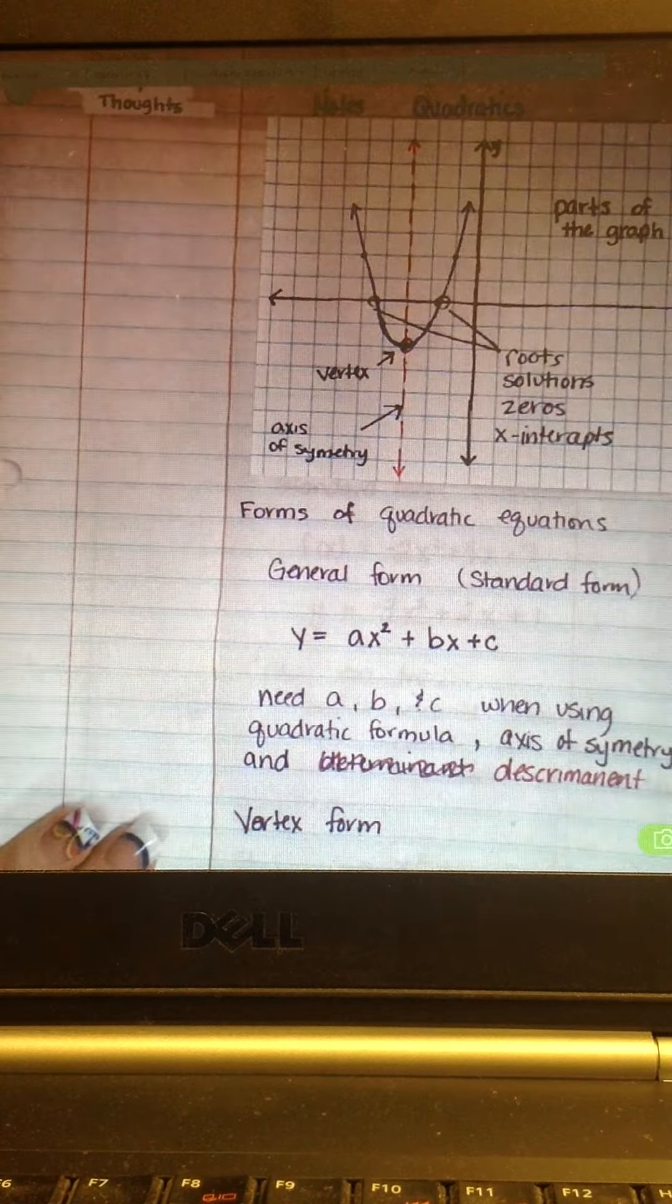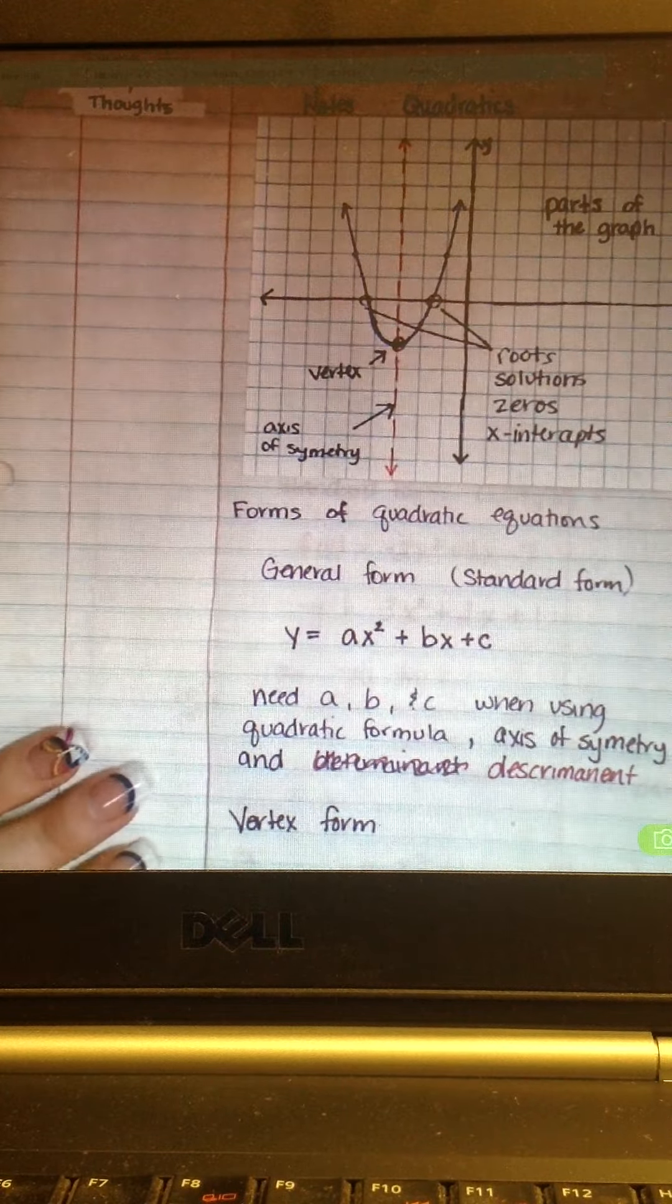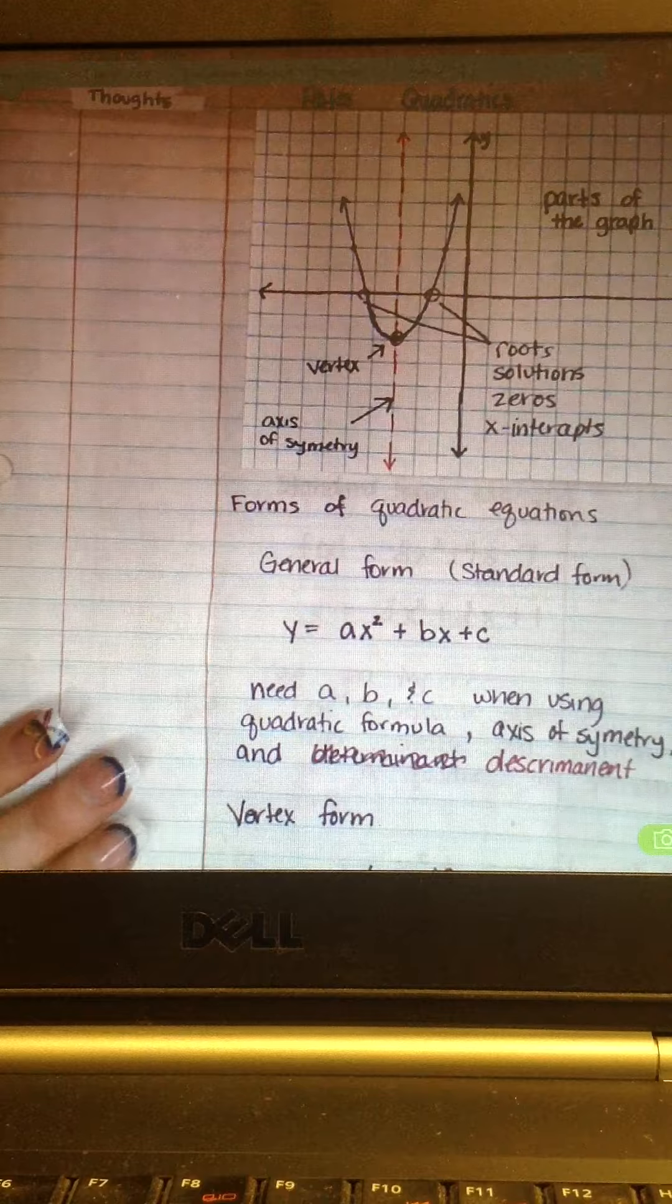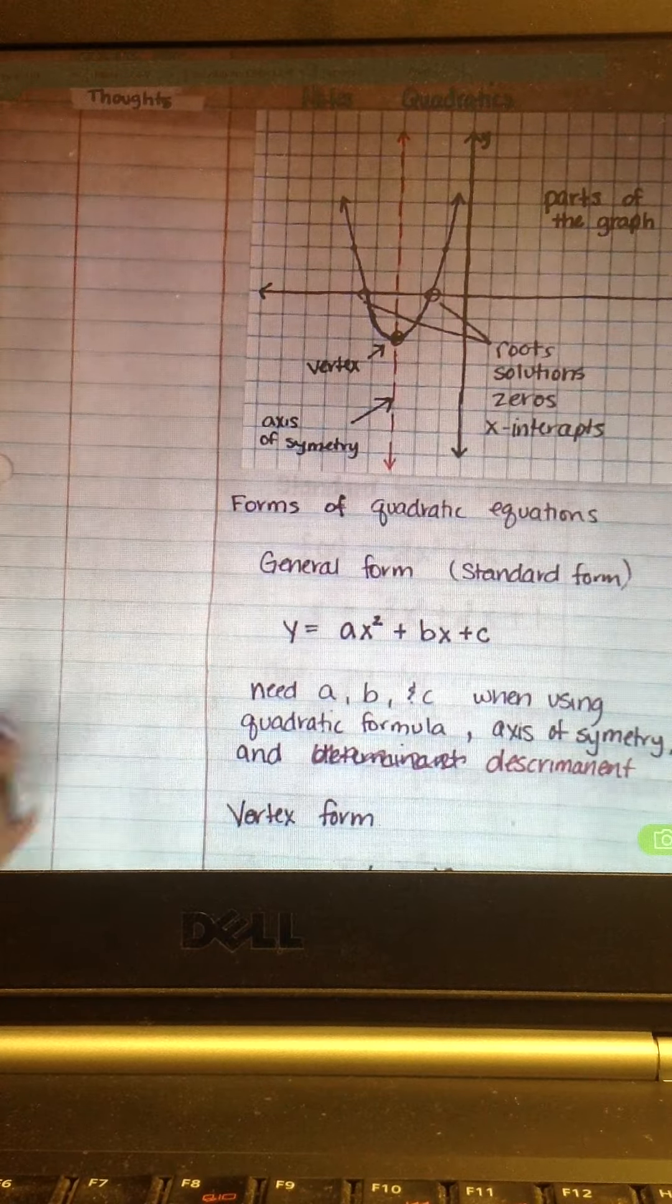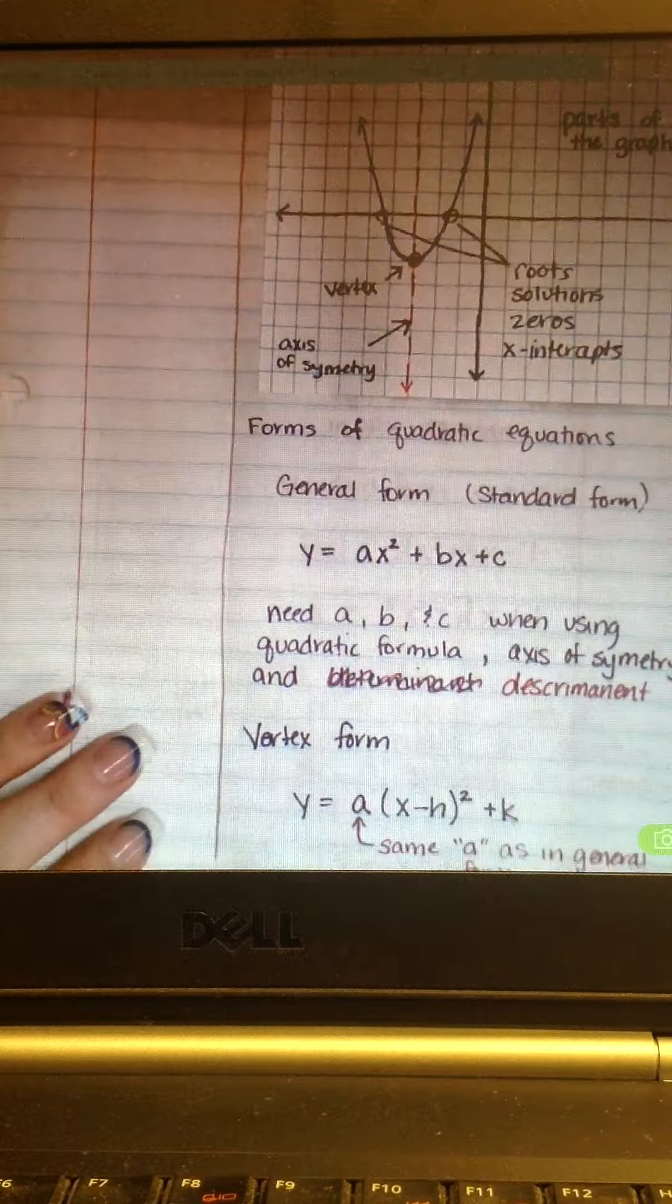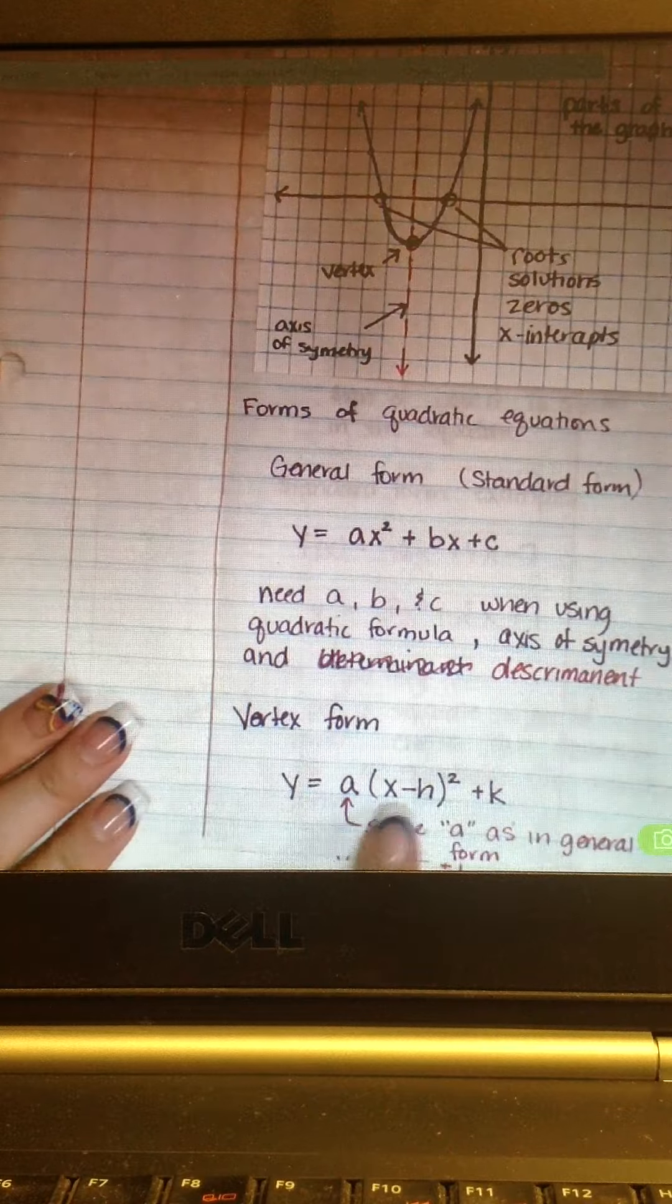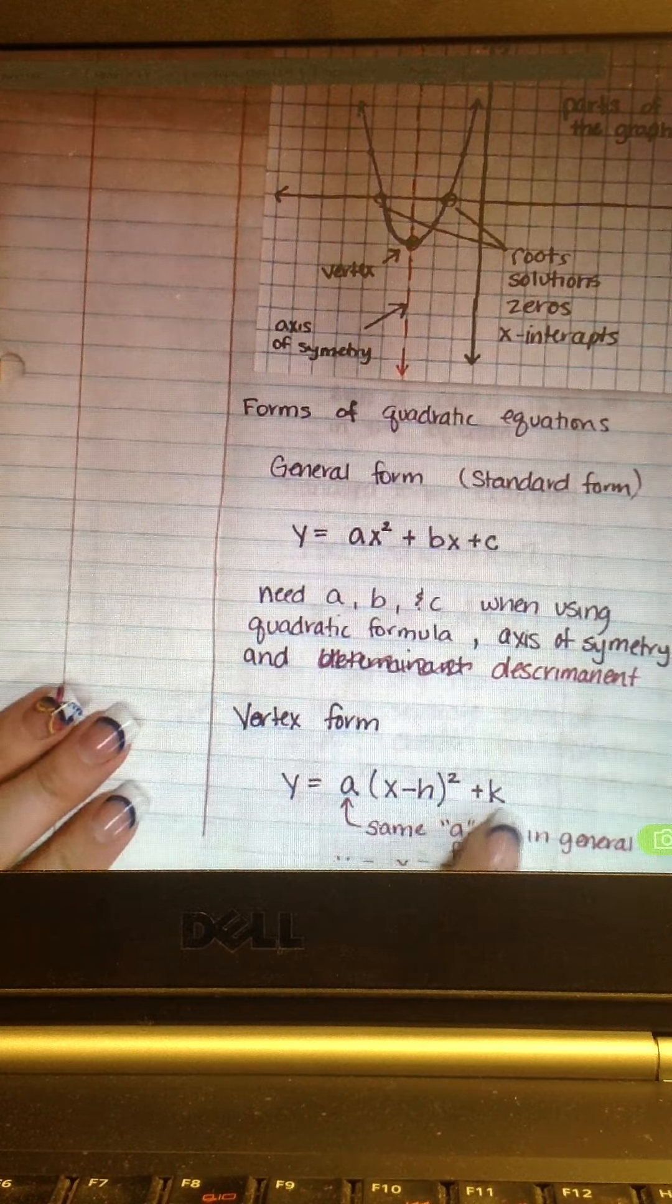So then, the next form, and yes, you may need to pause it at this point to write some of this stuff down because I am going kind of quickly, but it's going to keep the video a little shorter. So, vertex form is Y equals A times X minus H squared plus K.